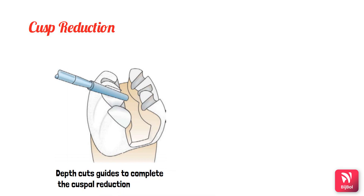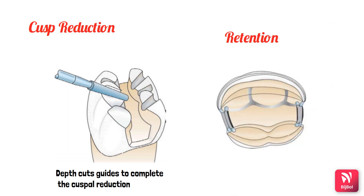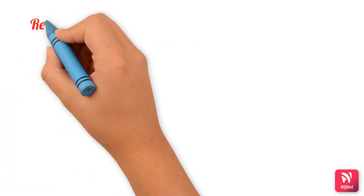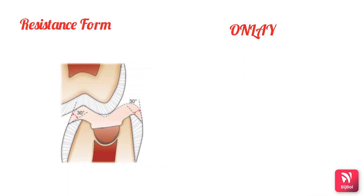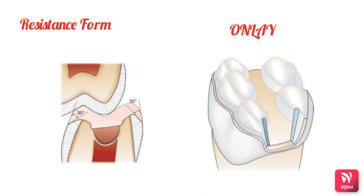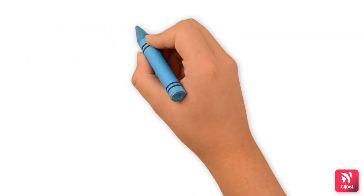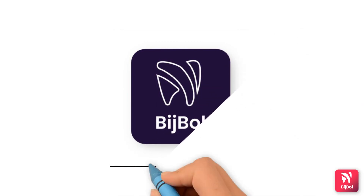After cuspal reduction, grooves are placed at the facial axial line angle and lingual axial line angles in the dentin, providing added retention to the onlay cavity. Finally, the junctions between the counter bevels, secondary flares, and gingival bevels are rounded to produce an uninterrupted blending of all junctions. The final preparation of the onlay cavity involves cleaning by removing debris from all cavities using an air-water syringe or cotton pellet. This concludes the brief overview of inlay and onlay cavity preparations.